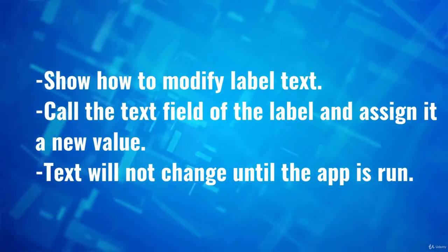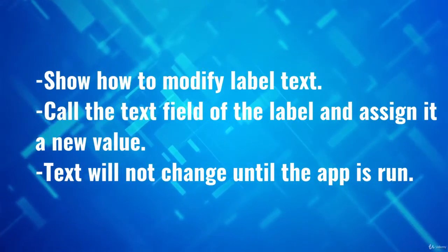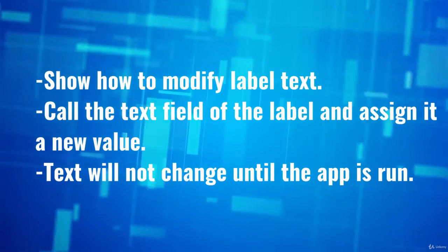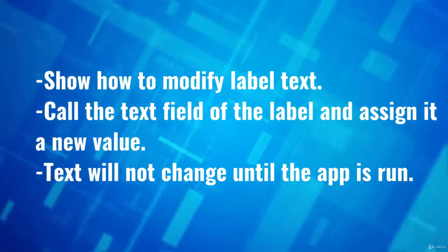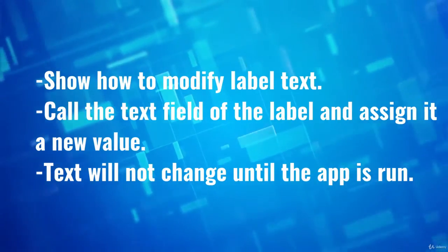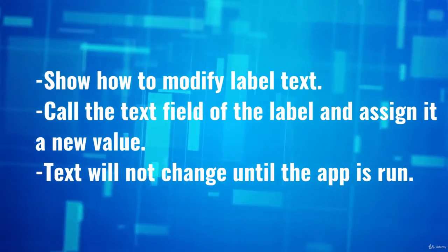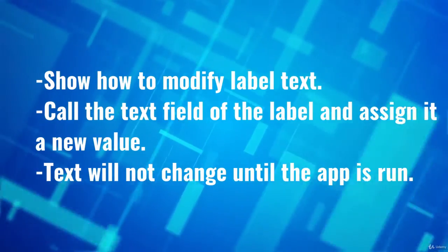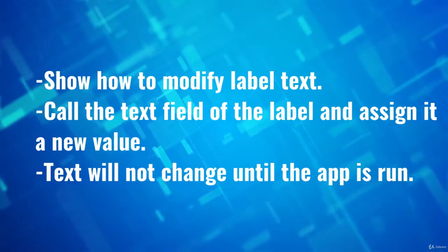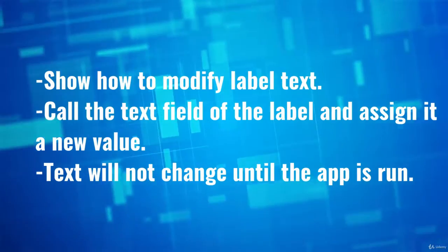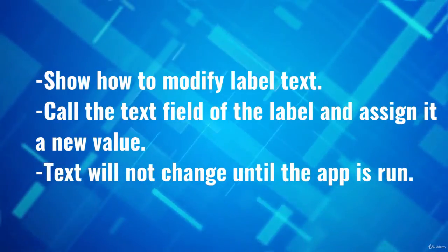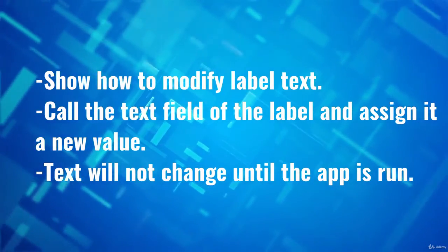We won't see the text change until the app is run. I'm going to show you how to run it - it's just a simple matter of pressing the play button in the top left corner. If we assign text as an attribute directly, it will appear as soon as the app is run, until we modify it in code, at which point the code will dictate that the label contains different text.